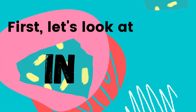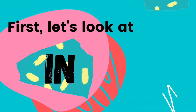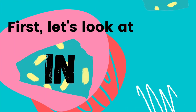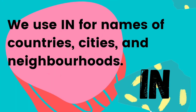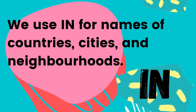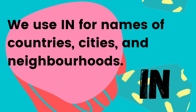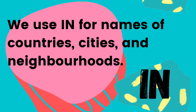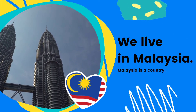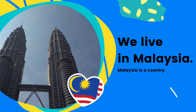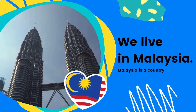First, let's look at in. How to use in as a preposition of place? Well, we use in for names of countries, cities, and neighbourhoods. Countries like Malaysia, Japan, Singapore, Indonesia, and cities like Kuala Lumpur, Ipoh, Penang, and etc. Let's look at the example. We live in Malaysia. Malaysia is a country, so we use in.